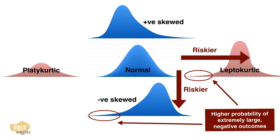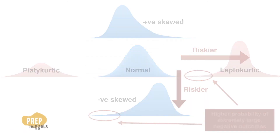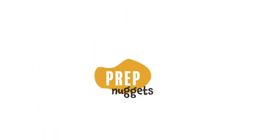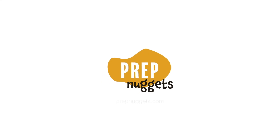That's all for this short lesson. Make sure you're able to identify the various skewed distributions and kurtosis effects, and understand their risk characteristics. See you at the next topic.